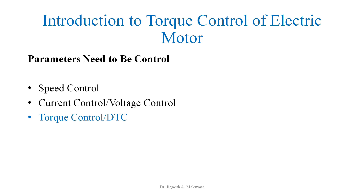Speed of the motor results from the torque. First, torque is generated in the current-carrying conductor, which results in speed — higher torque generated results in higher speed. So, if we want to control the speed, we can also control the torque. Torque can be controlled by controlling the current.